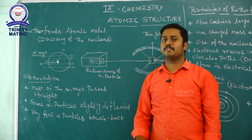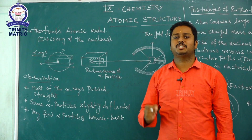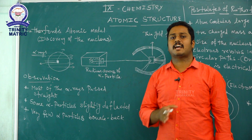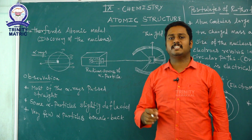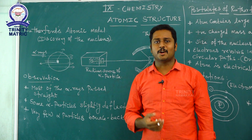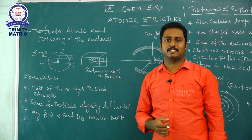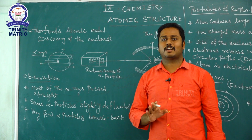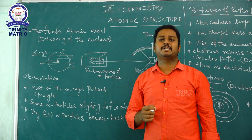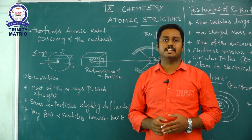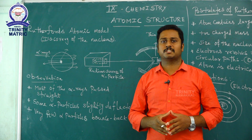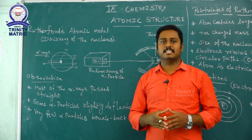In his experiment, he used two important things: a thin sheet of gold foil and alpha particles. He passed alpha particles through the thin sheet of gold foil. Why did he choose gold foil? Because gold is a highly malleable metal — malleability means the metal can be converted into a thin sheet form. That is why Rutherford chose gold for his experiment.